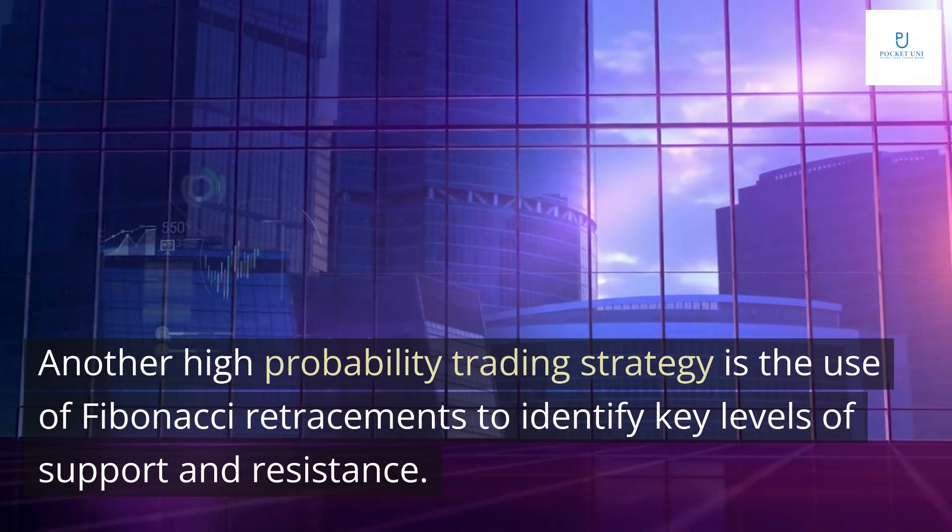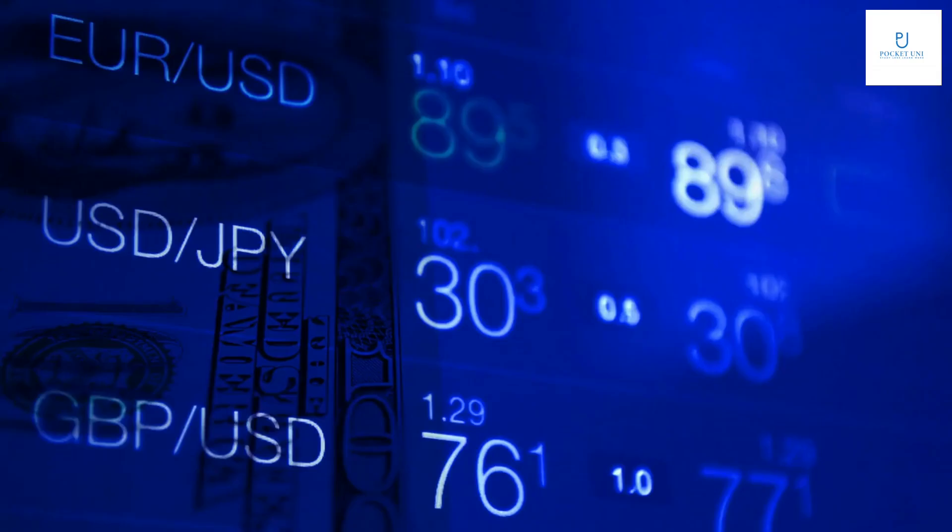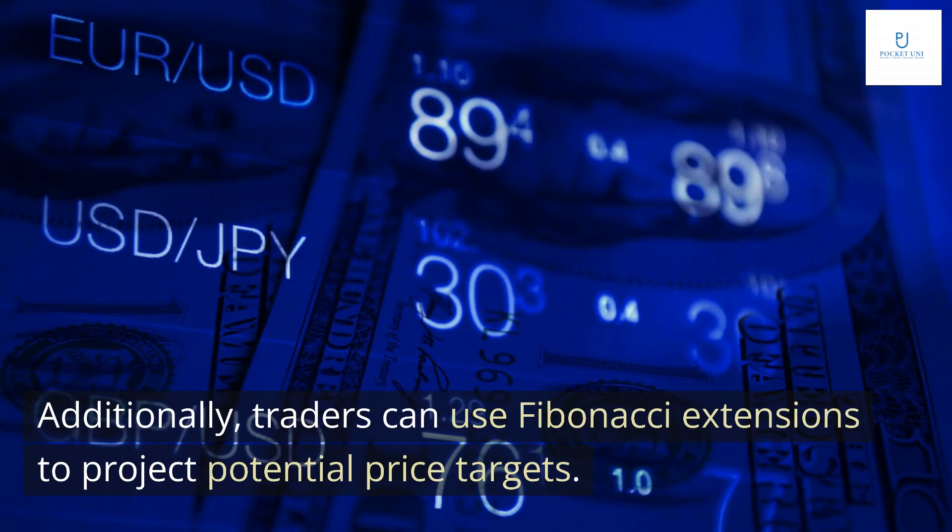Another high-probability trading strategy is the use of Fibonacci retracements to identify key levels of support and resistance. Traders can enter positions near these levels with tight stop losses to limit risk. Additionally, traders can use Fibonacci extensions to project potential price targets.